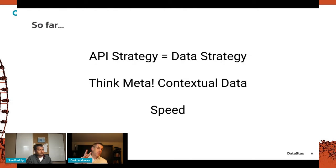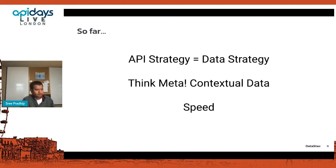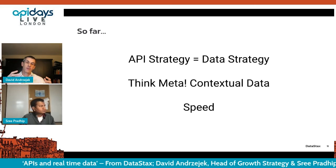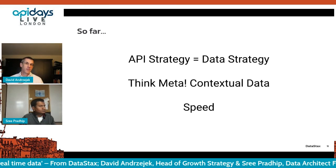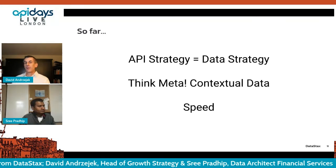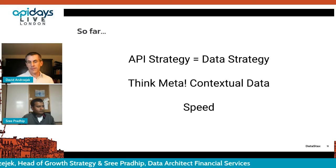So the three points so far: your API strategy is tied to your data strategy; you have to think about contextual data — not just the data you have but everything around that transaction or interaction; and you have to think about speed. Now I'll hand it over to Sri, who's going to show you how to actually do this.